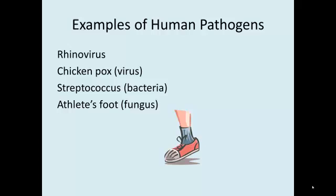Examples we're familiar with of human pathogens: rhinovirus, chickenpox is another kind of virus disease. Colds and the flu are caused by viruses. Streptococcus causes a lot of different infections — that's a bacterium. And athlete's foot is a fungus. In humans, fungi are the hardest to fight off because they're much closer to humans than the rest of them, so it's difficult to kill them without killing us.